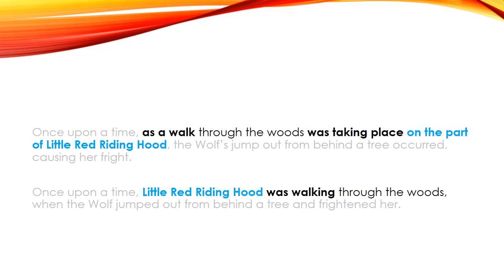What's the action taking place in the first phrase? 'A walk was taking place.' And who is doing the walking? It's Little Red Riding Hood. So instead of 'as a walk was taking place on the part of Little Red Riding Hood,' a much more direct way of saying it is 'Little Red Riding Hood was walking.' Here the verb and action are the same, and the character and subject are the same. In the first version, the character and subject are different — 'walk' is the subject, not Little Red Riding Hood — and the verb 'was taking place' is not the main action; the action is walking.